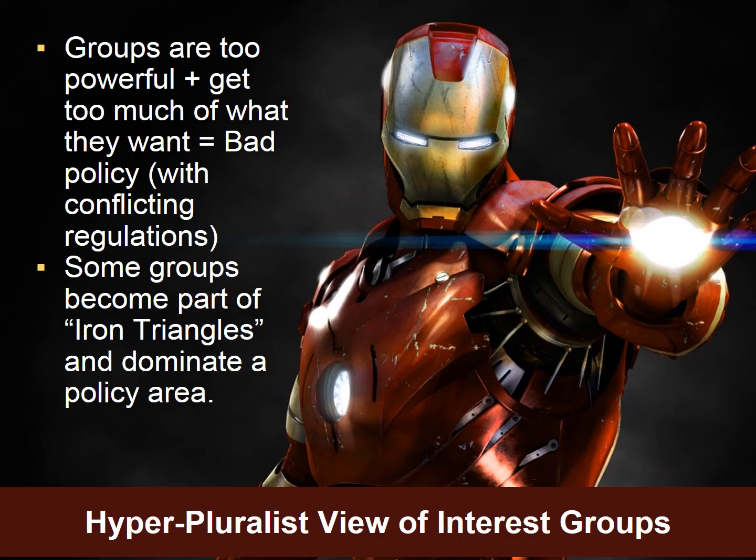This boils down to what we refer to as the hyper-pluralist view of interest groups. When interest groups are too powerful and they get too much of what they want, we usually get bad policy for the American public, and often this policy has conflicting regulations — things that kind of work against each other.